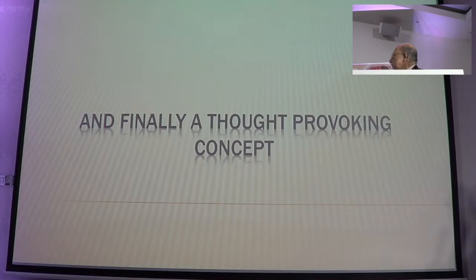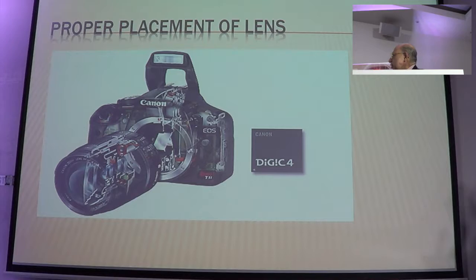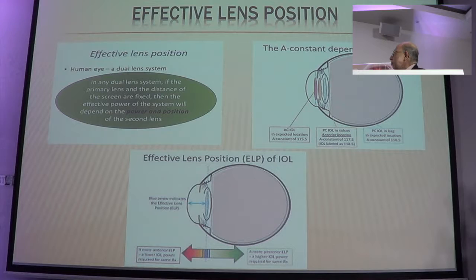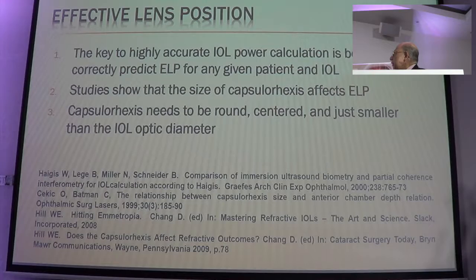And finally, a thought-provoking concept: proper placement of the lens. Like a camera which has multiple lenses — if you have not positioned them all perfectly, you have to account for the effect of lens position, where it has to really fit. The key to effective lens position is a corrected ELP. There are various changes which then occur over a period of time.